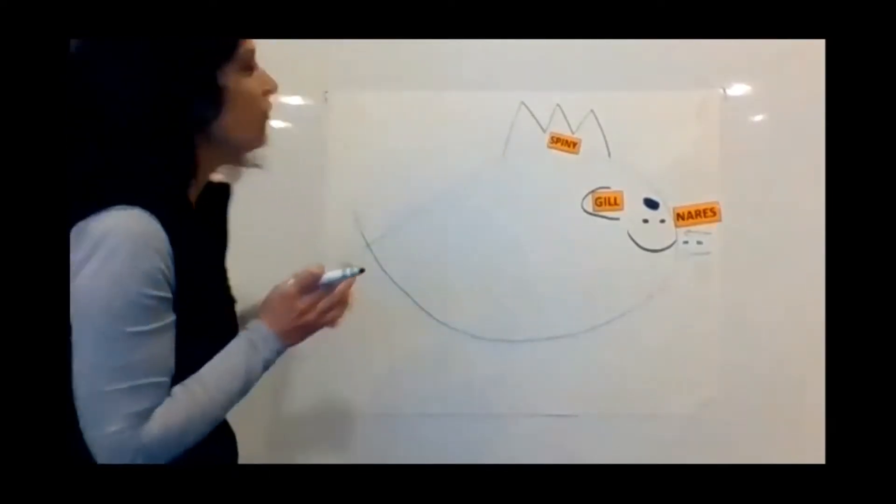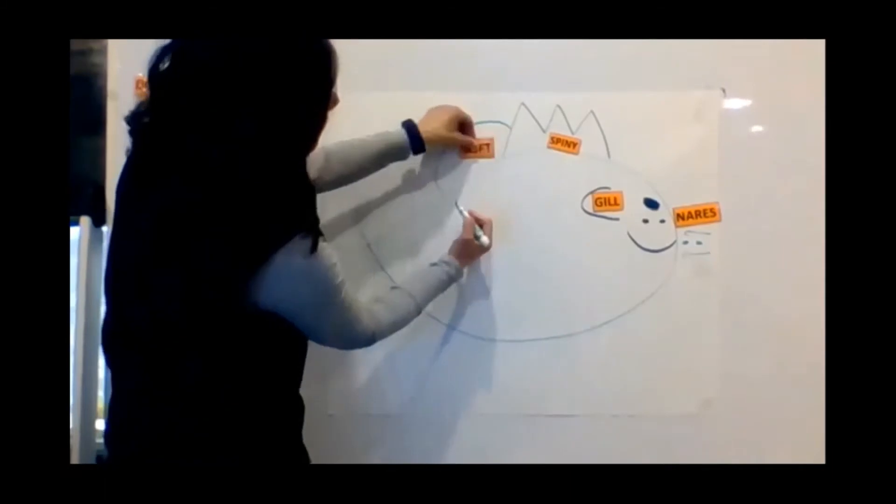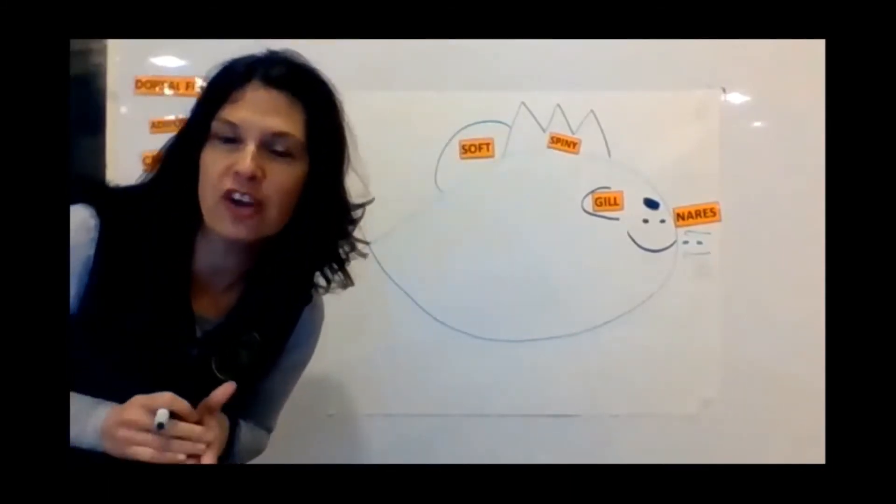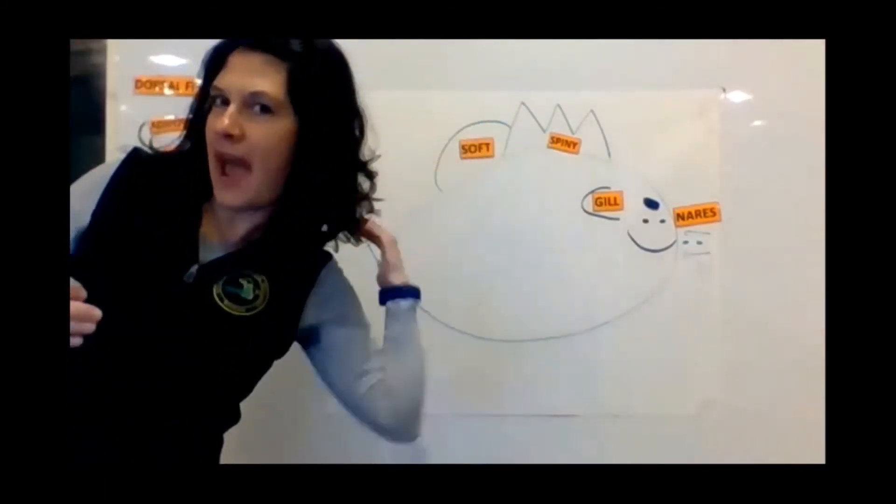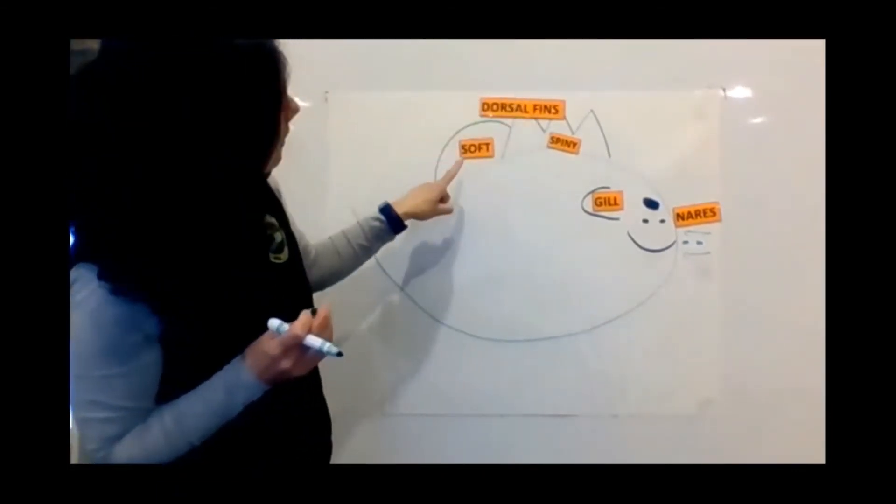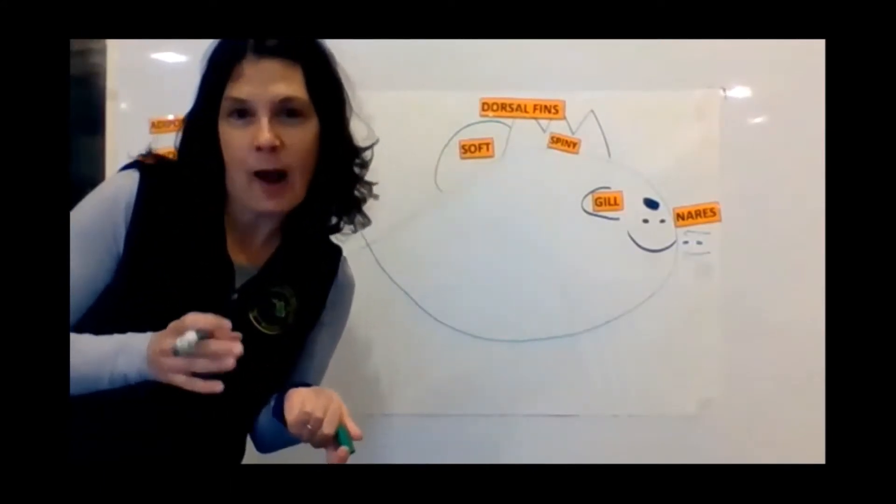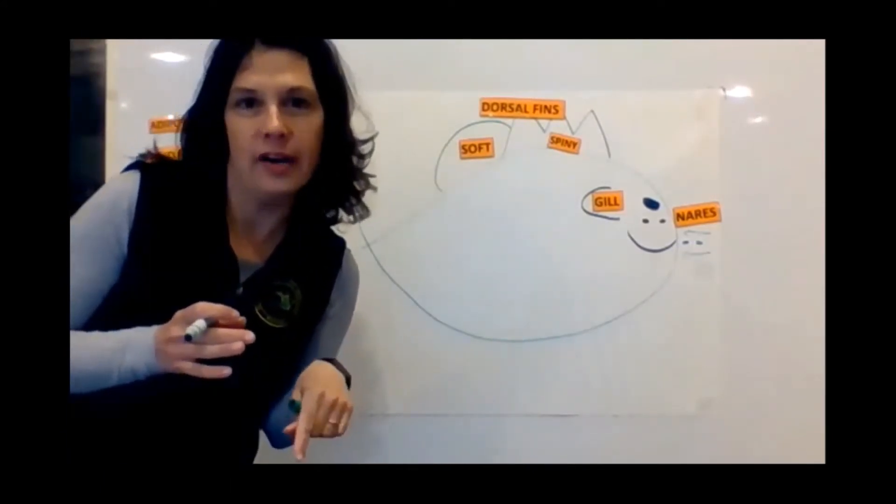Let's give this fish another fin. Right behind that, a soft dorsal fin. And when I say dorsal, that means on the back of the fish. That soft dorsal fin is going to help the fish balance in the water.